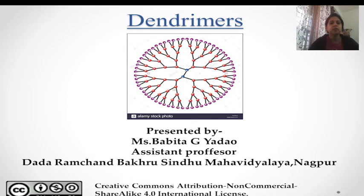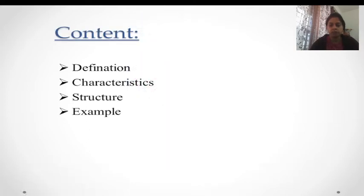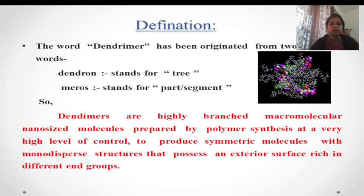Hello friends, let's see a small presentation as an introduction to dendrimers. We'll discuss the definition, characteristics, structure, and examples. The word dendron stands for tree and the word meros stands for part or segment. The dendrimer has come from a tree-like structure which has parts and segments.